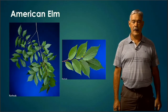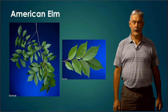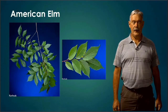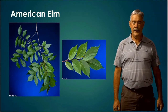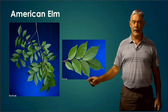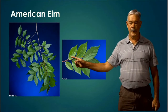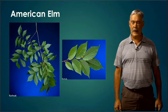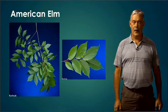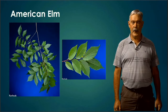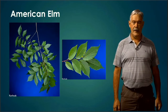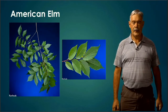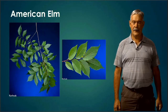The first tree is our American Elm. This tree has single alternating leaves and an unequal base. You'll notice that at the base of these leaves, the base is not really equal on each side. It also has a serrated leaf margin, meaning it has teeth or little grooves on the edge of the leaves.